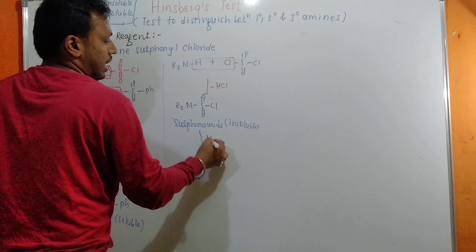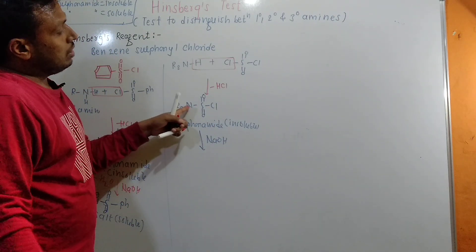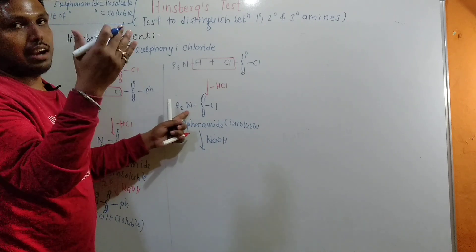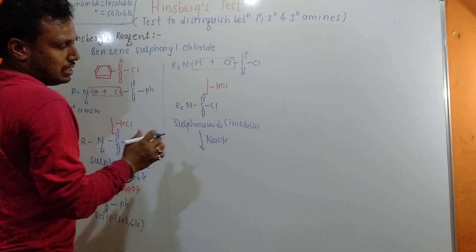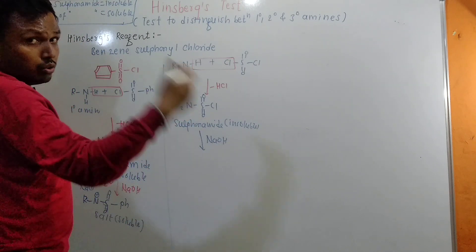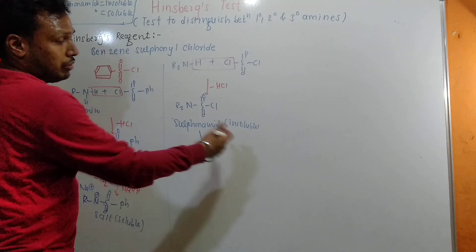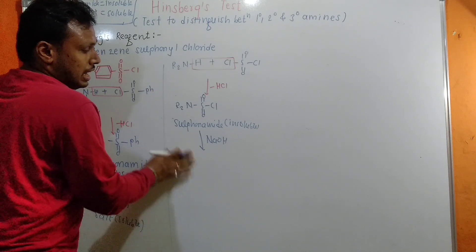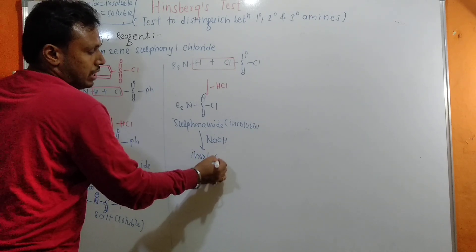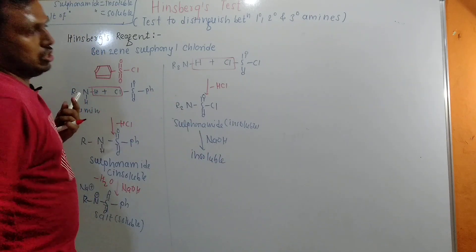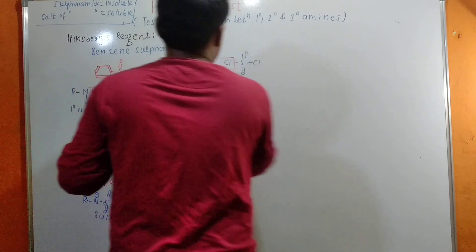When we add NaOH to the secondary amine sulfonamide, NaOH is a base. For it to react, there must be a hydrogen attached to nitrogen. But in this case the N-H bond is absent, so this compound is not acidic. If it's not acidic, it won't combine with the base, won't form a salt, and the sulfonamide remains insoluble even in NaOH. That is the observation for secondary amine.